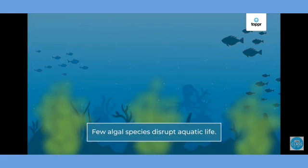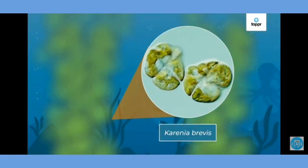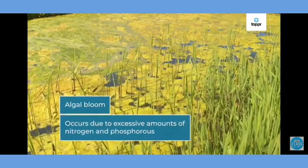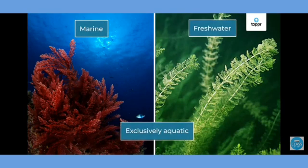However, there are certain harmful algae that create problems for the environment. One example is Karenia brevis, which creates something called an algal bloom. In an algal bloom, algae multiply so excessively that they cover the surface of the water, causing oxygen levels to decrease. When there is an excessive amount of nitrogen and phosphorus, the entire aquatic life in that water gets depleted.